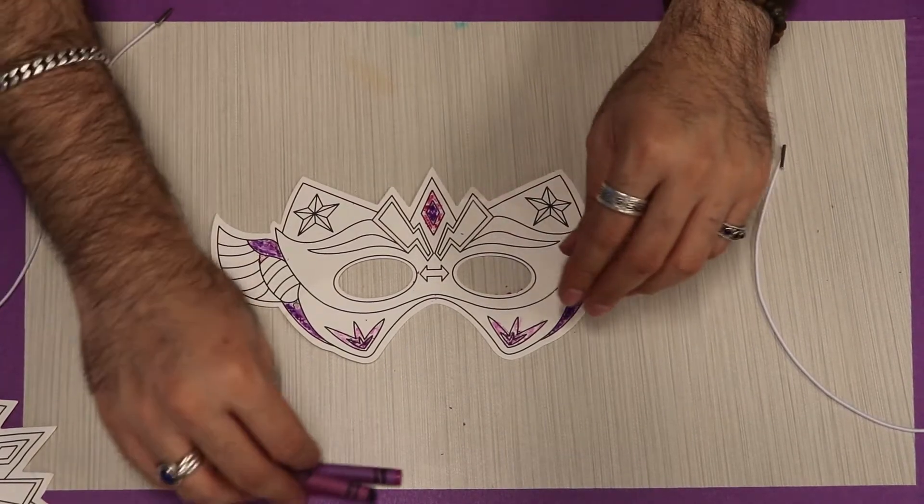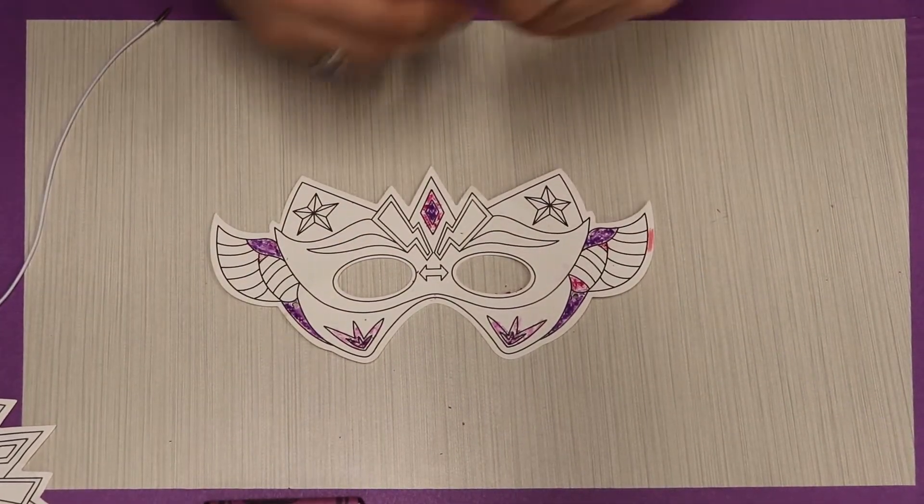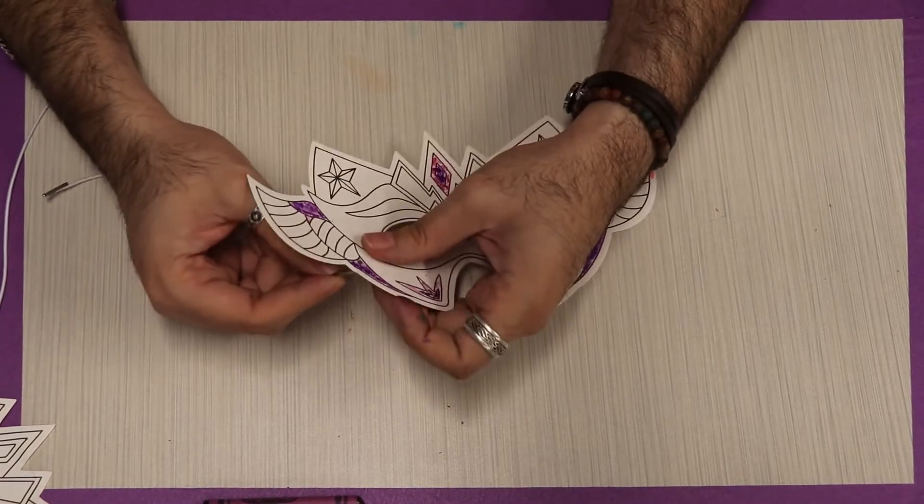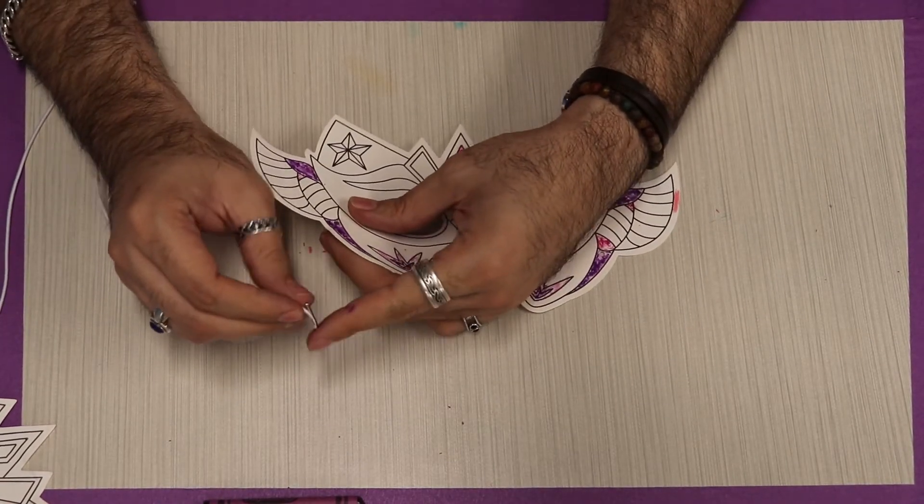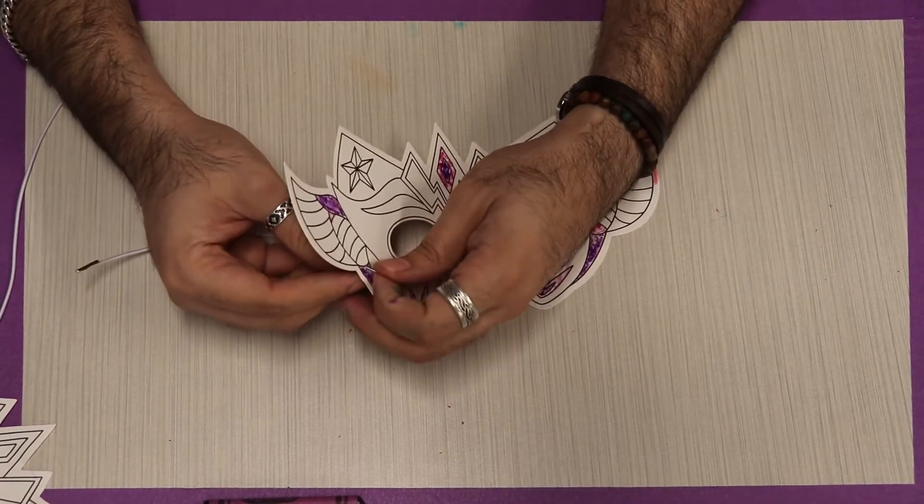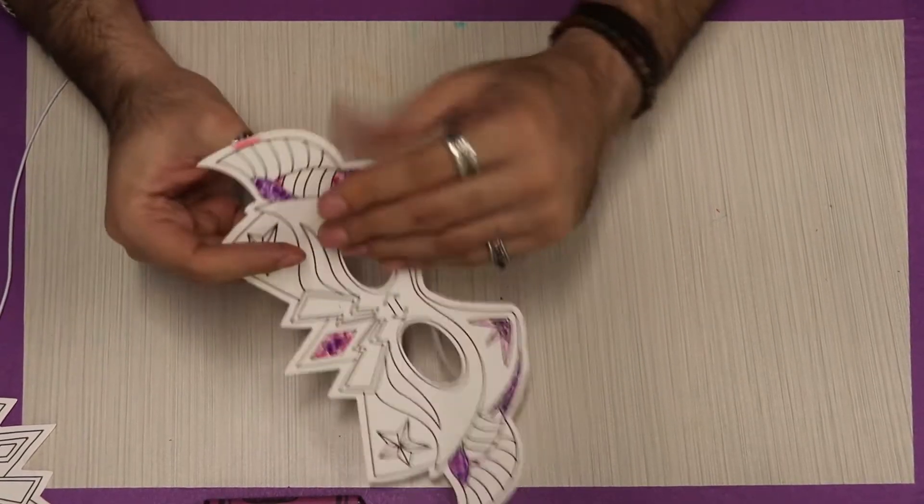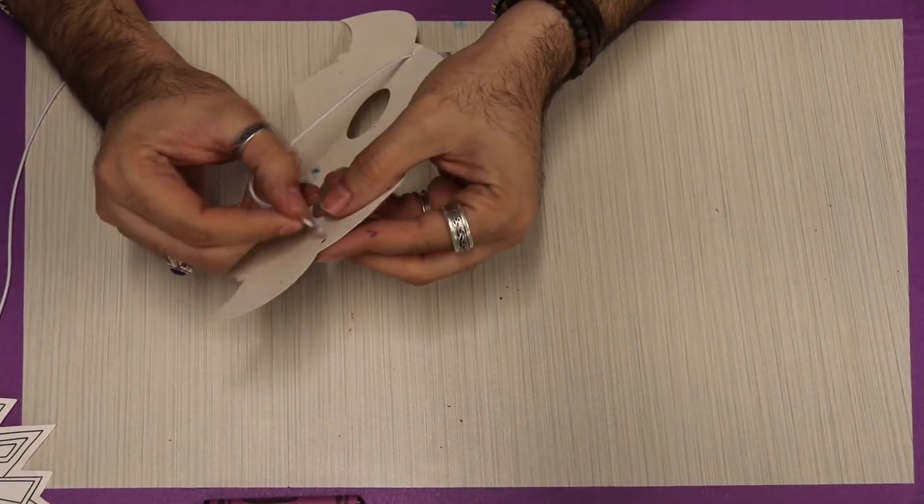So after you get this all nice and colored and you put your string back through, just fold the little metal over towards the string, put it through the hole and pull it tight. Do that again on the other side.